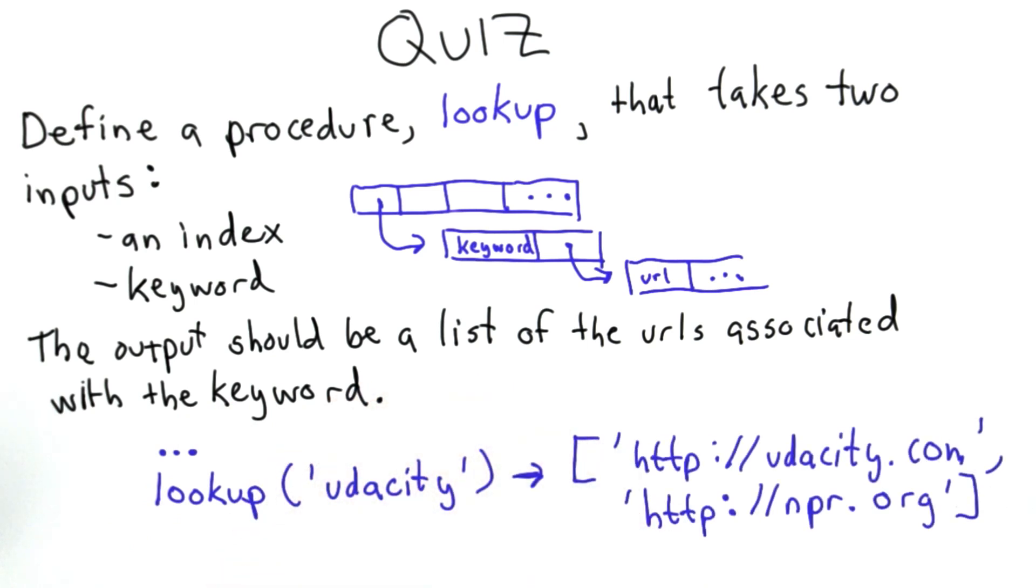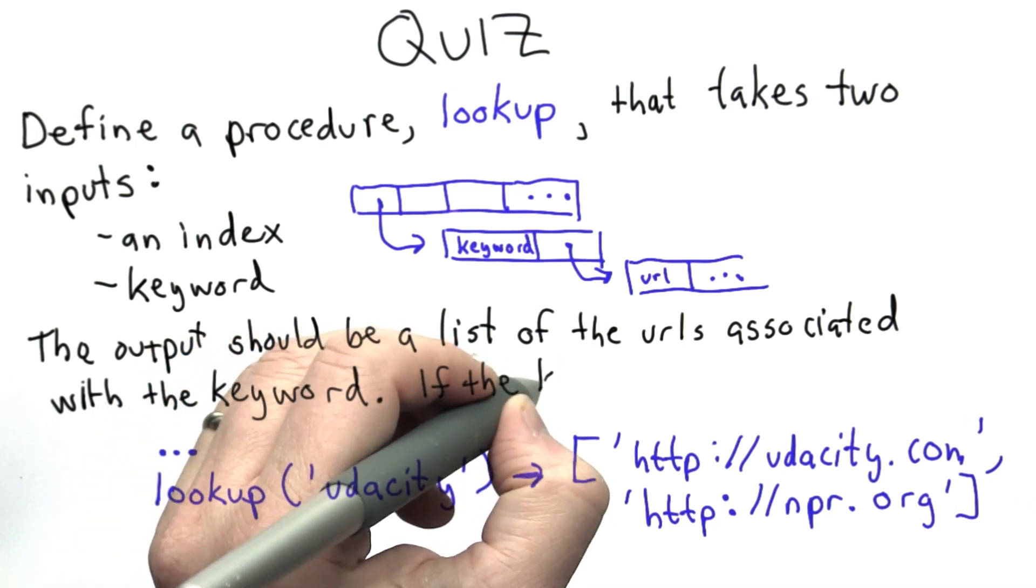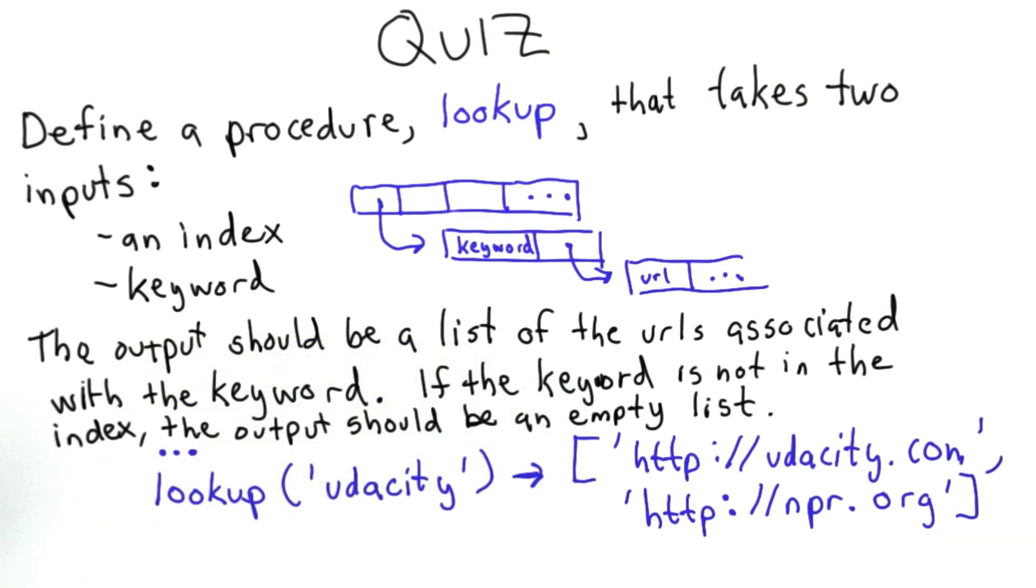We should consider what happens if the keyword does not exist. If the keyword doesn't exist, there are no URLs associated with that keyword, so we should just return an empty list.